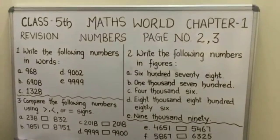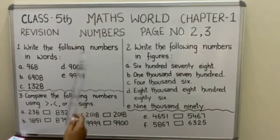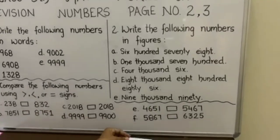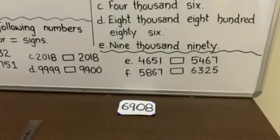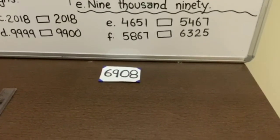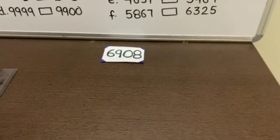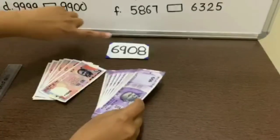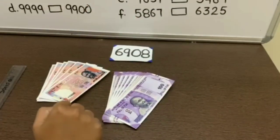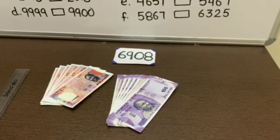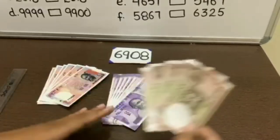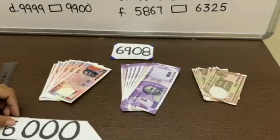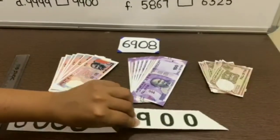The first question is: write the following numbers in words. We will solve part B. The statement is 6908. First of all, we will take currency notes according to the given number — 6900. There is no digit at the tens place, so we will not take any 10 rupee note. And next is 8, so here are 8 notes of 1 rupee. Next are the man cards — 6908.